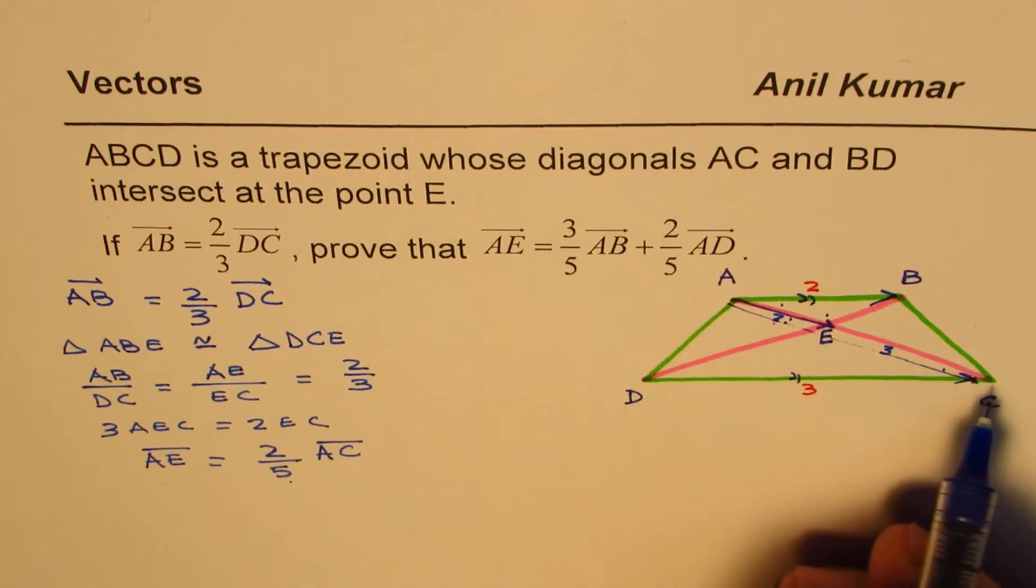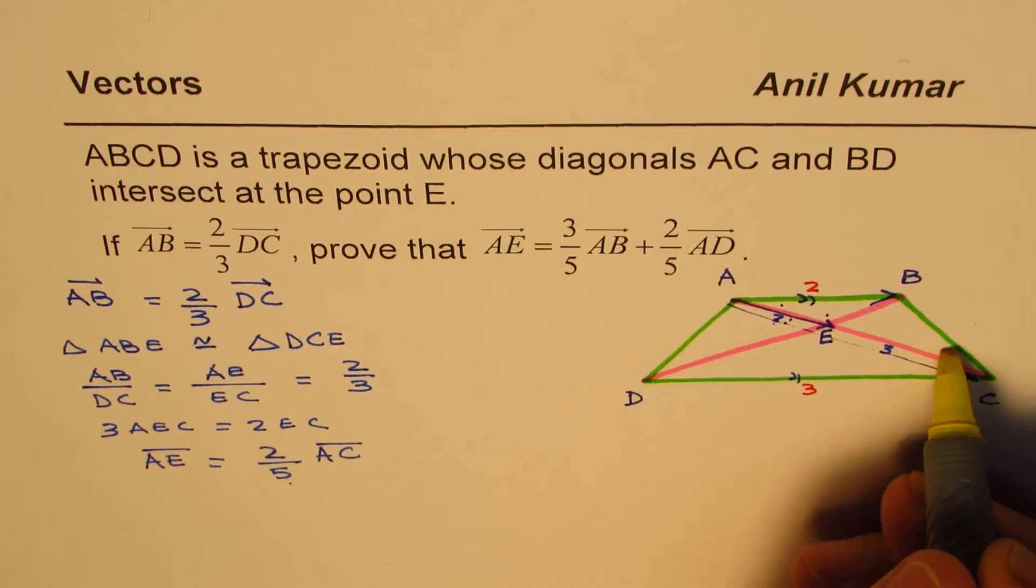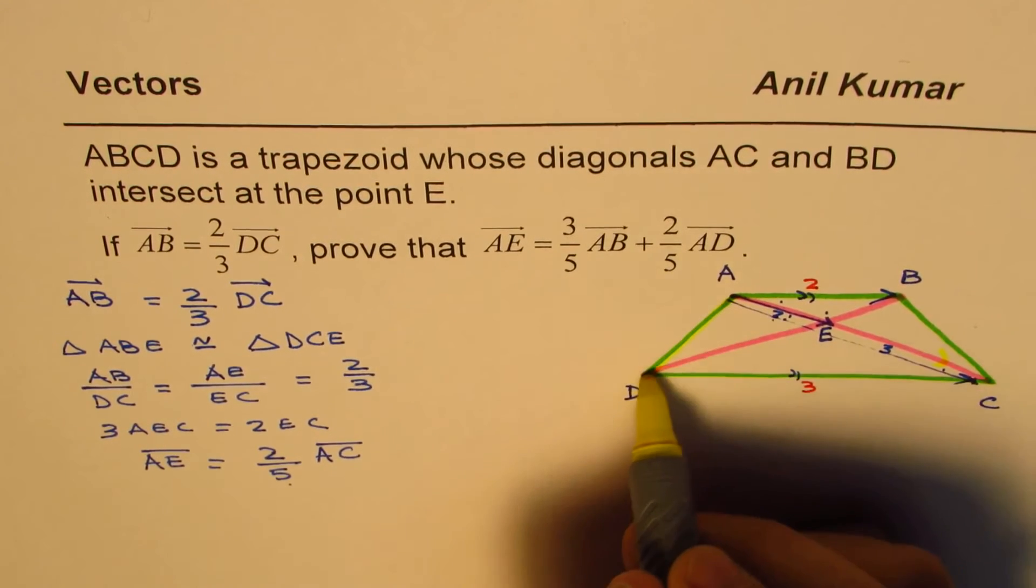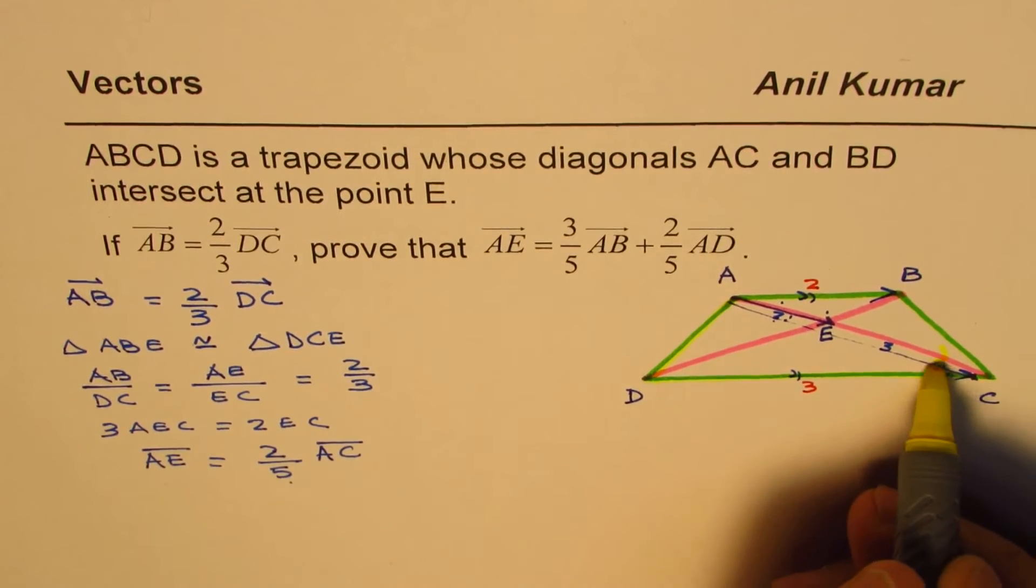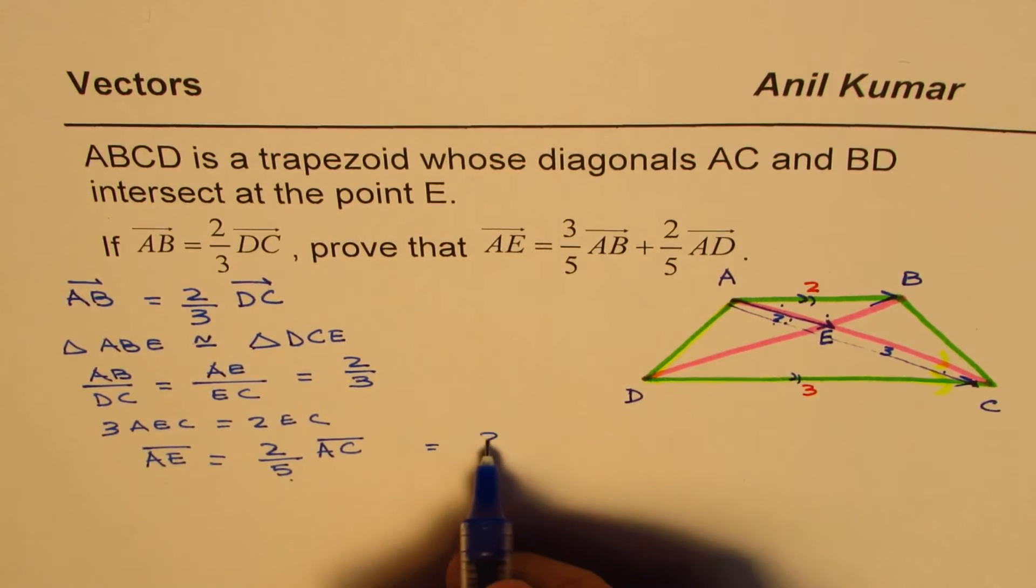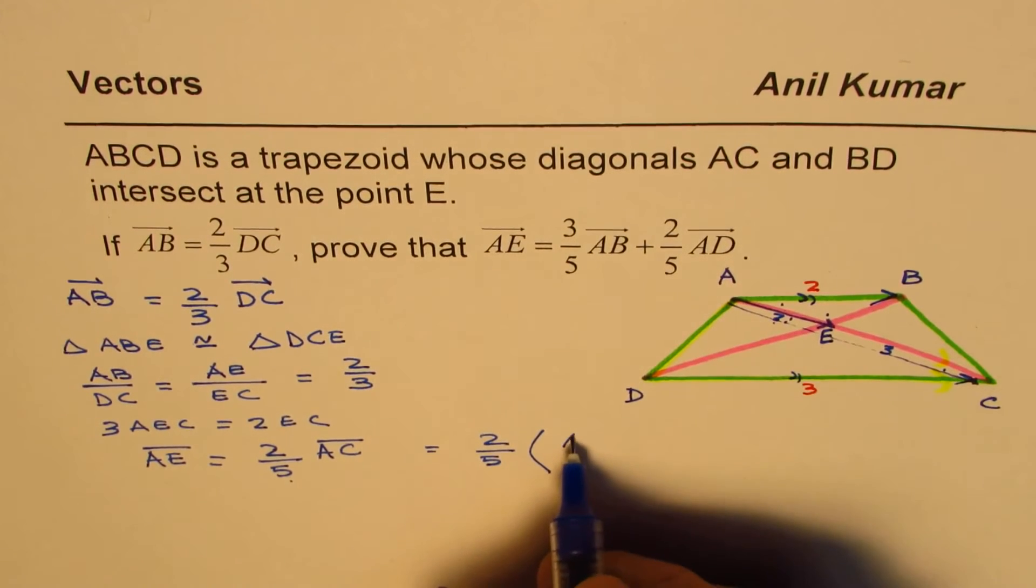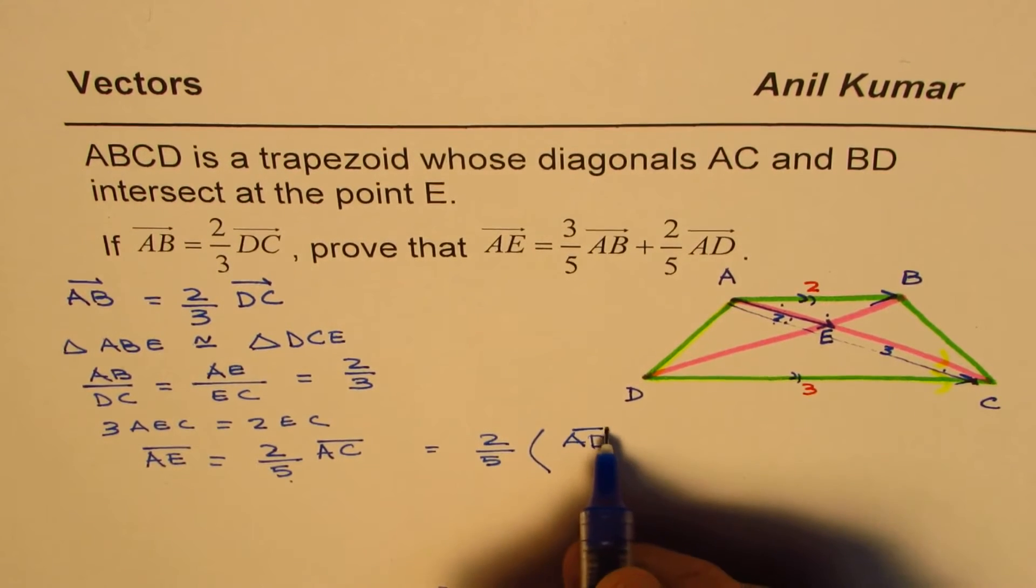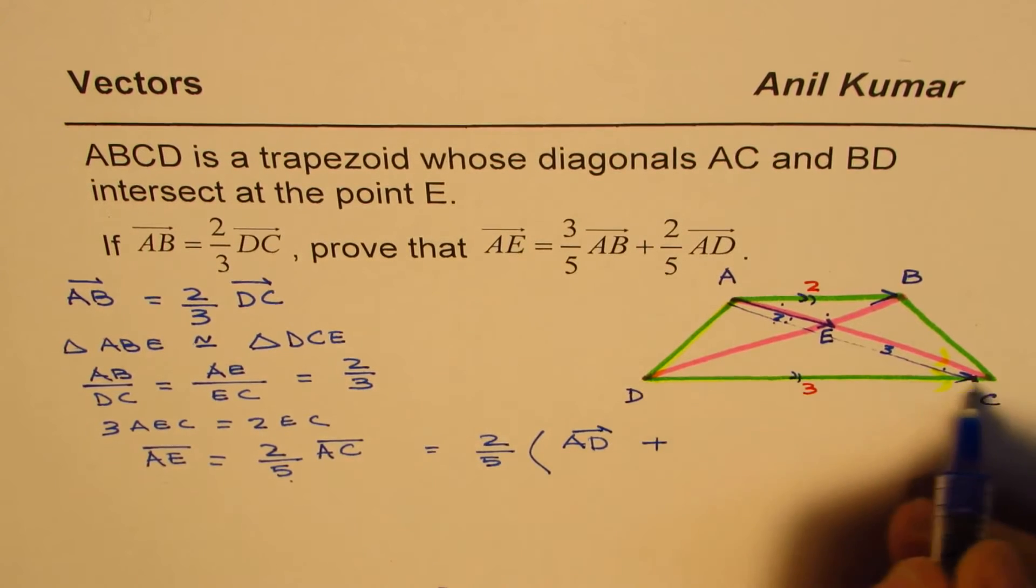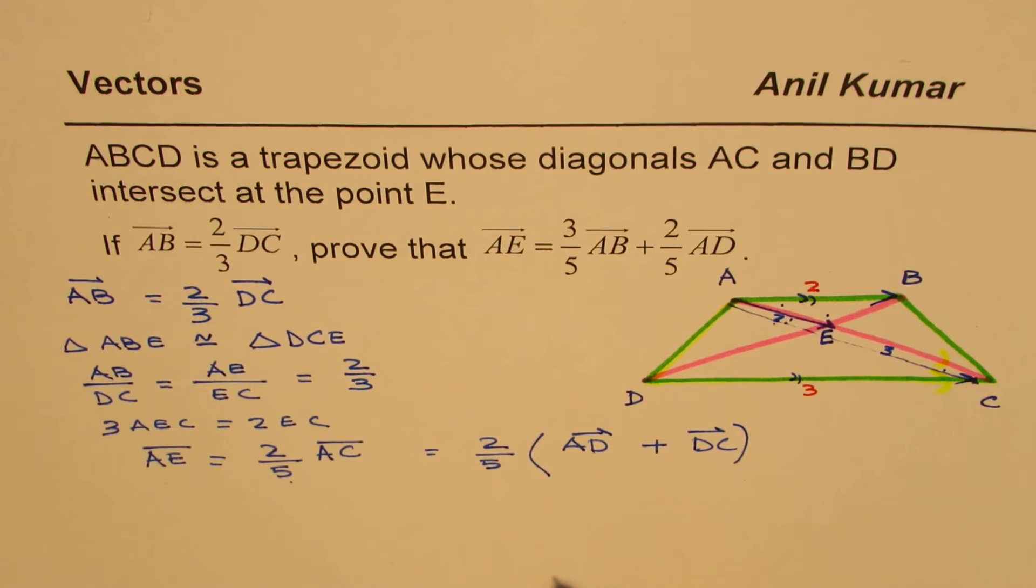But what is AC equals to? Let's see what AC is equal to. AC will be AD plus DC. That is AC, so we could write this as 2 fifth of AD plus DC.